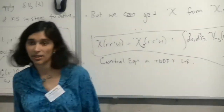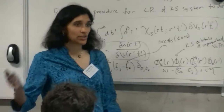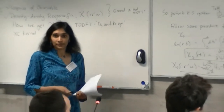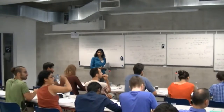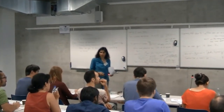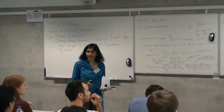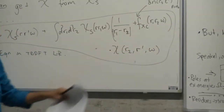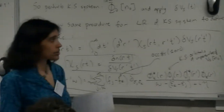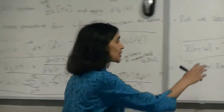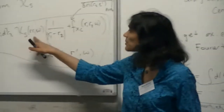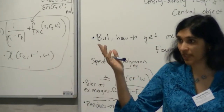Everything on the right-hand side is computable: chi_S is the Kohn-Sham response function, which I haven't defined yet, and f_xc is the functional derivative of the exchange-correlation potential with respect to the density, evaluated at the ground state density. This is the exchange-correlation kernel — you only need variations around the ground state. The Dyson-like equation can be solved iteratively or translated into matrix equations.